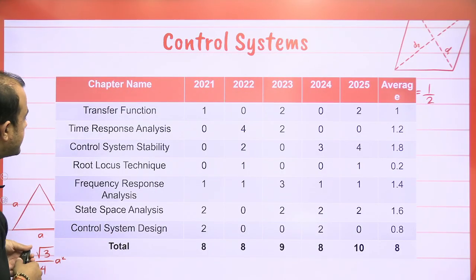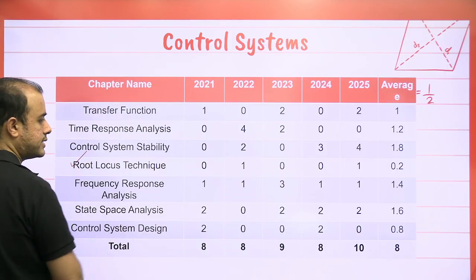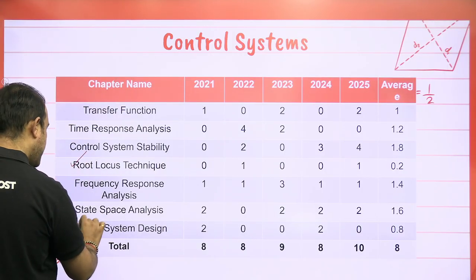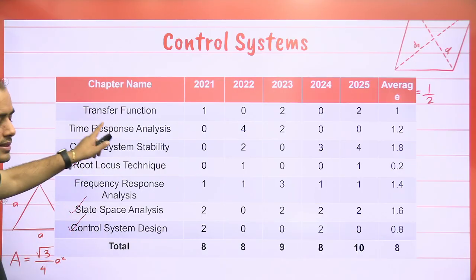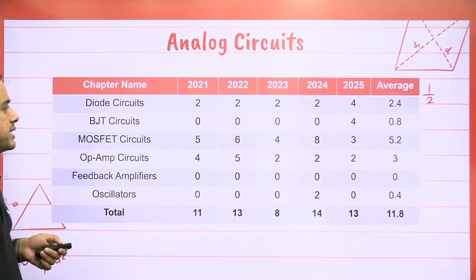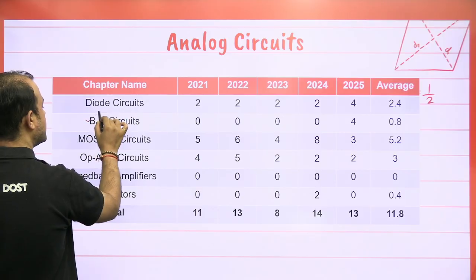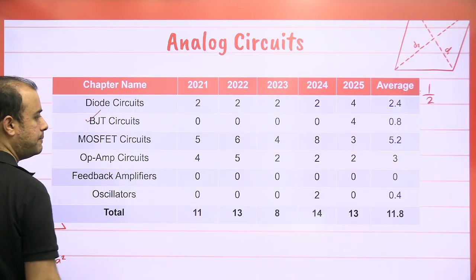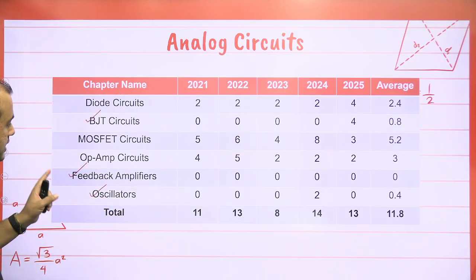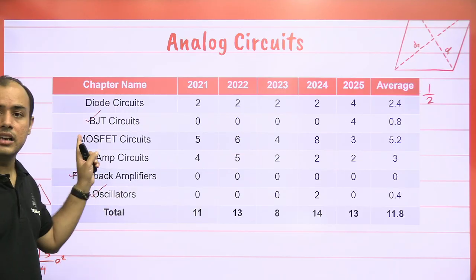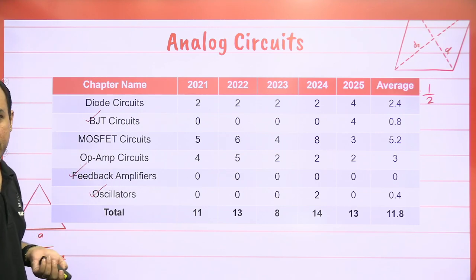In Control Systems for ECE, you can skip Root Locus, Design, and State Space; cover the rest — four chapters are important. In Analog Electronics for ECE, you can skip BJT, Feedback Amplifier, and Oscillator. Unlike Electrical, ECE students also need to cover MOSFET — MOSFET is very important for ECE.